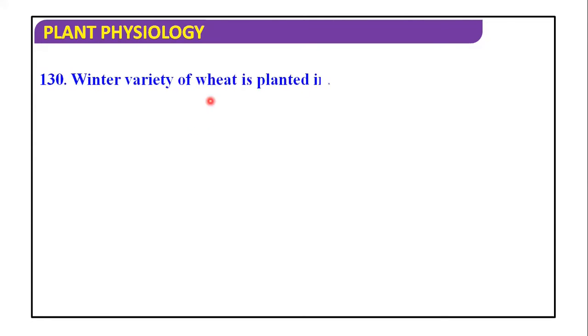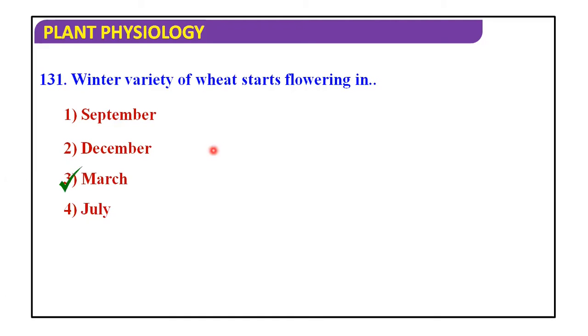Winter variety of wheat is planted in September, December, March and July, and the answer is September. Winter variety of wheat starts flowering in September, December, March and July, and the answer is March.